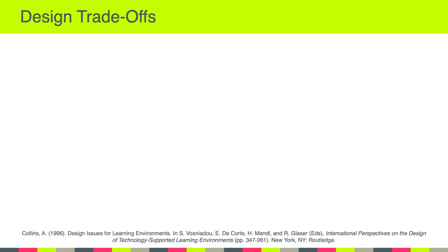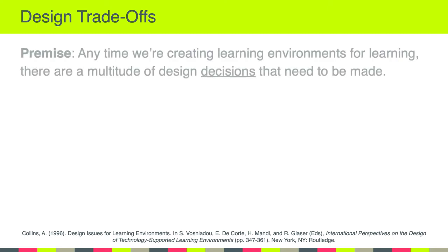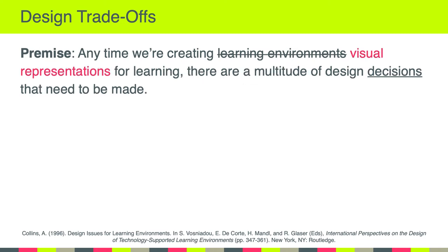With that, I want to talk about the concept of design trade-offs. The idea of design trade-offs in relation to learning design and technology was introduced by Alan Collins, a famous learning scientist at Northwestern University. In a 1996 article, he talked about the premise that anytime we're creating learning environments for learning, there are a multitude of design decisions that need to be made. I'm sharing that with you because I want to replace 'learning environments' with 'visual representations' — so the premise becomes: anytime we're creating visual representations for learning, there are a multitude of design decisions that need to be made.